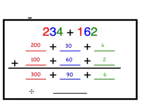So now we have the total — the answer or sum written in expanded form — and we can write that in standard form to give us our sum. We have 300 plus 90 plus 6. What is the sum of 234 plus 162? If you said 396, you are correct.